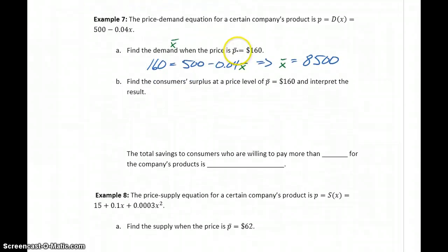So now that we know P bar, a specific price, and x bar, a specific demand level, we can find the consumer surplus at this specific price level by integrating from 0 to x bar, which in this case is 8,500. And then the function we're going to integrate is 500 minus 0.04x minus our value for P bar, so that $160.